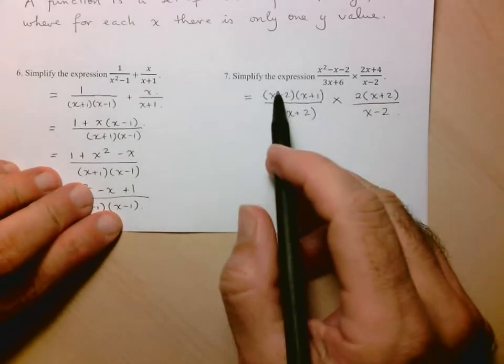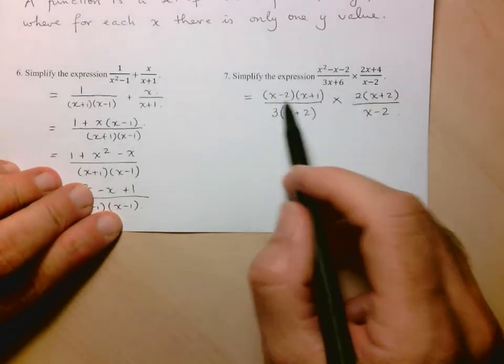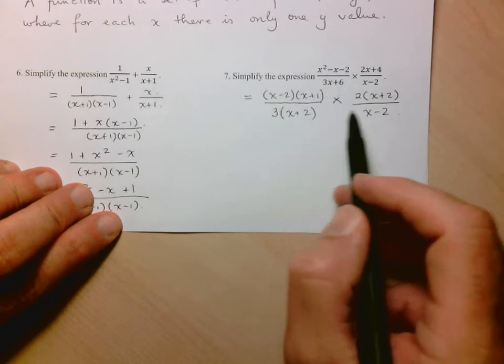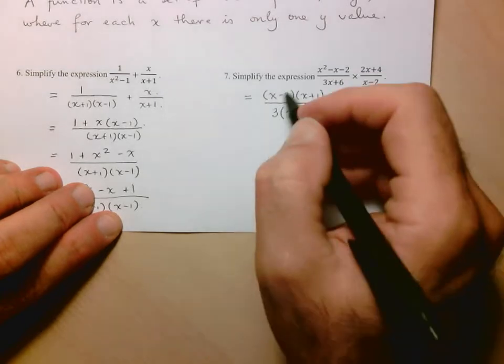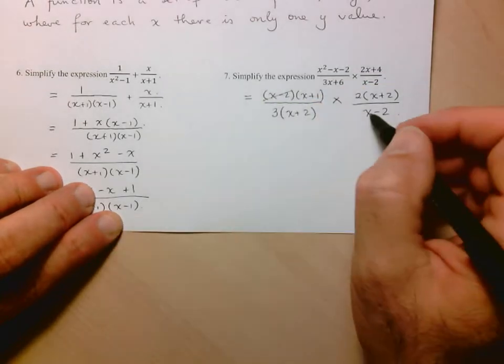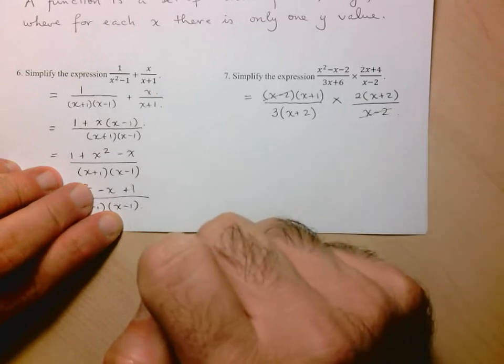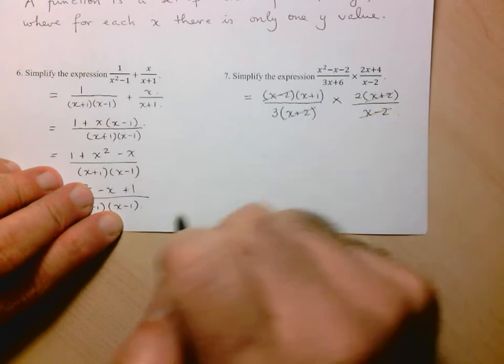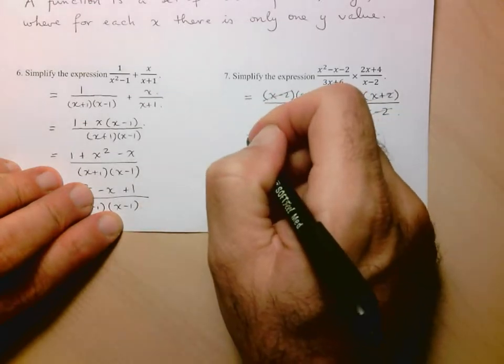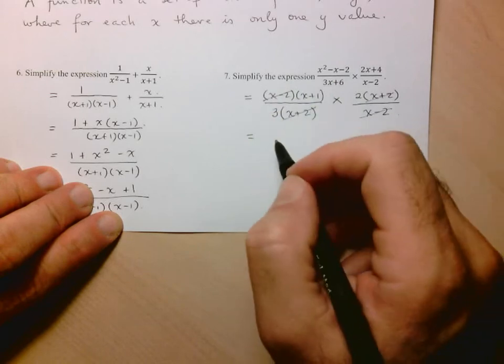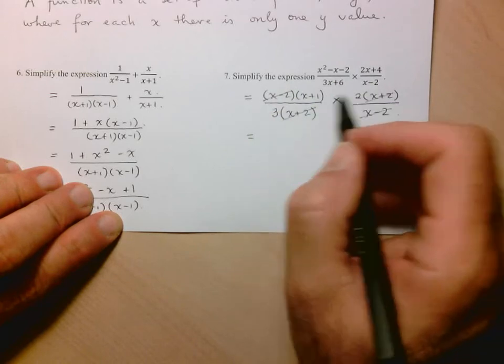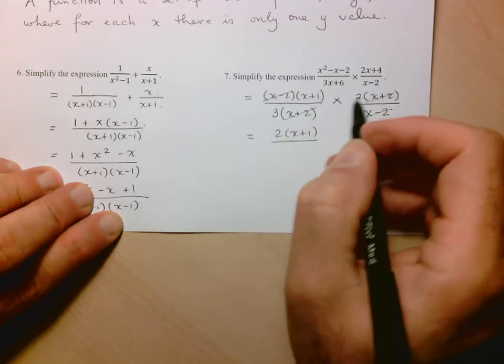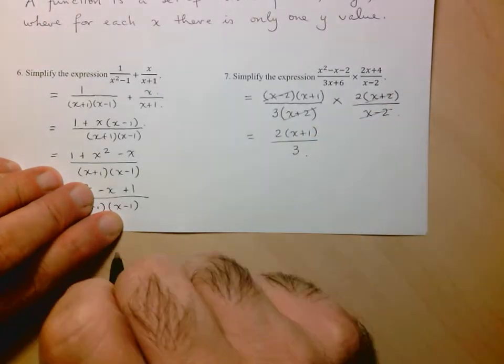So remember, I talked about simplifying before multiplying. You can simplify any factor in the numerator. Remember, we're talking about a factor, so something that's multiplied, with any factor in the denominator. So here, we see that this factor of x minus 2 reduces with the factor of x minus 2 in the denominator. This factor of x plus 2 here reduces with the factor of x plus 2 in the denominator. And so, what we have left, now, we will multiply. So in the numerator, all we have is 2 times x plus 1. And in the denominator, the only thing we have left is the 3.